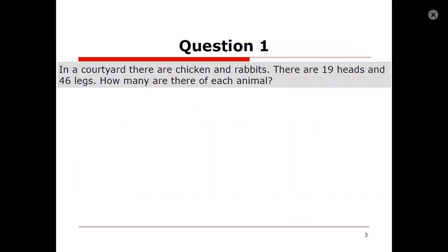In a courtyard there are chickens and rabbits. There are 19 heads and 46 legs. How many are there of each animal?